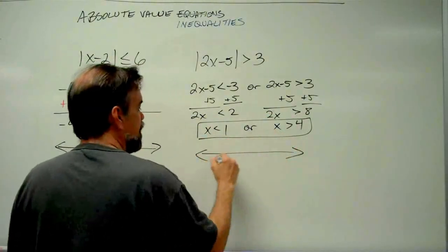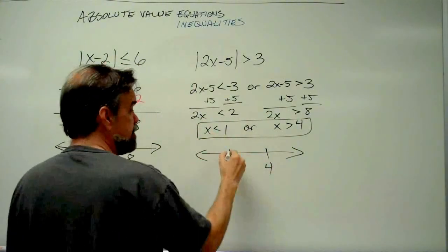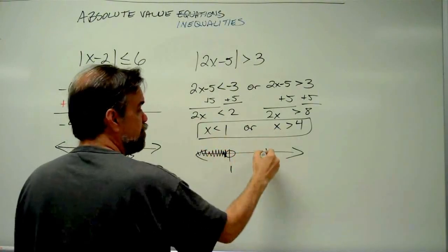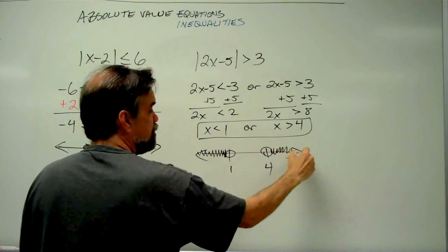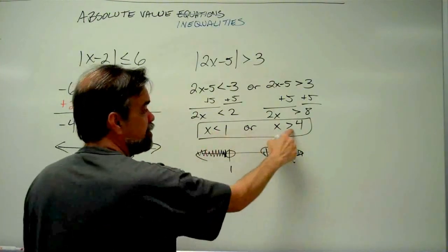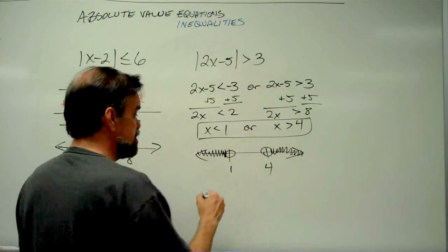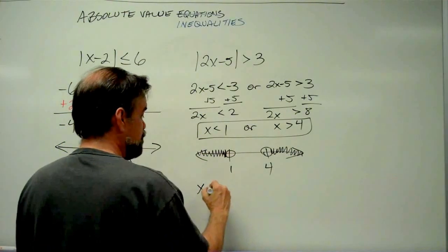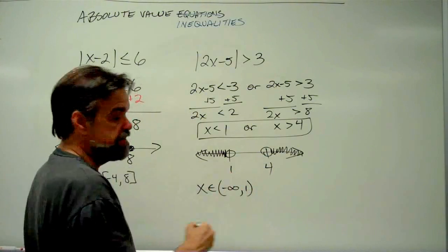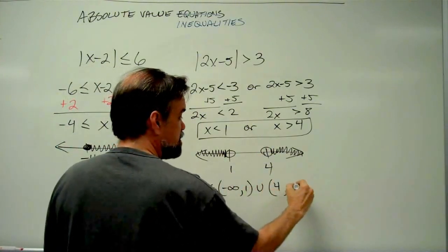On the number line, I'll put 1 and 4. x is less than 1, meaning it's on the left of 1, or it's greater than 4, meaning it's on the right of 4. I'm not shading in either of those two points because I'm not including them — there's no 'or equal to.' In interval notation: x is somewhere between negative infinity and 1, or between 4 and positive infinity.